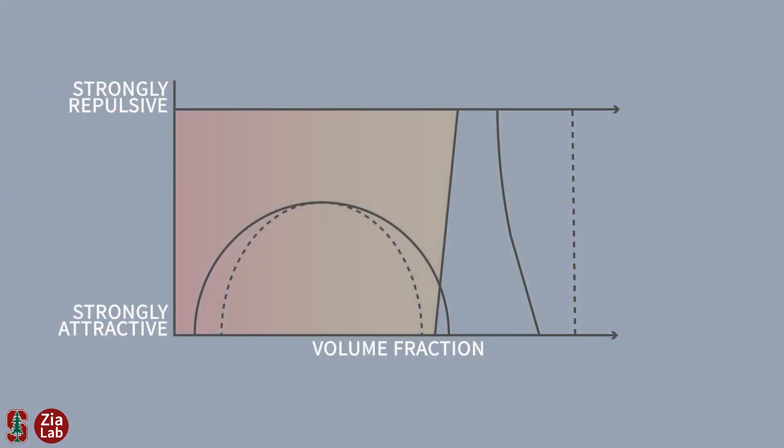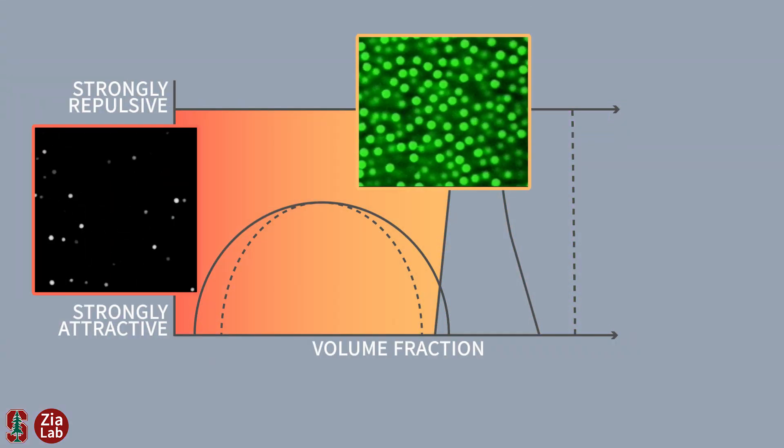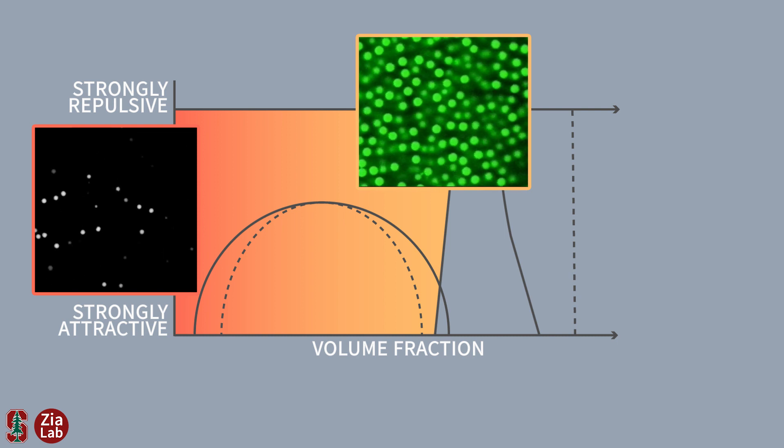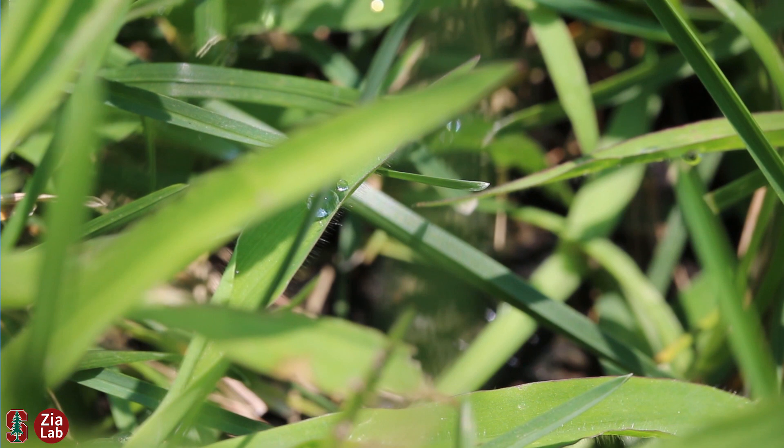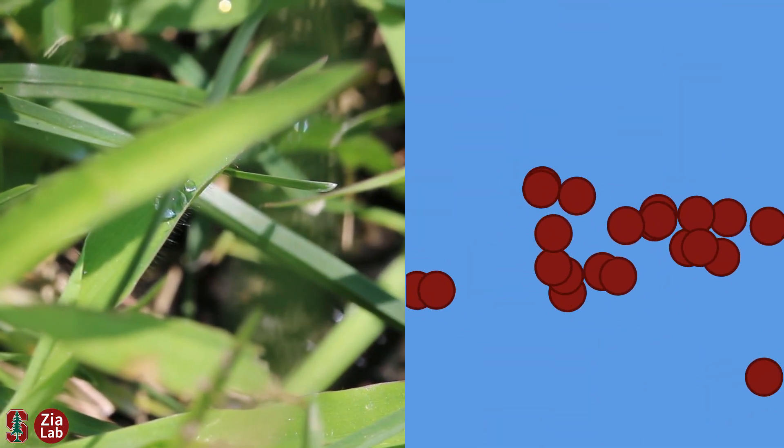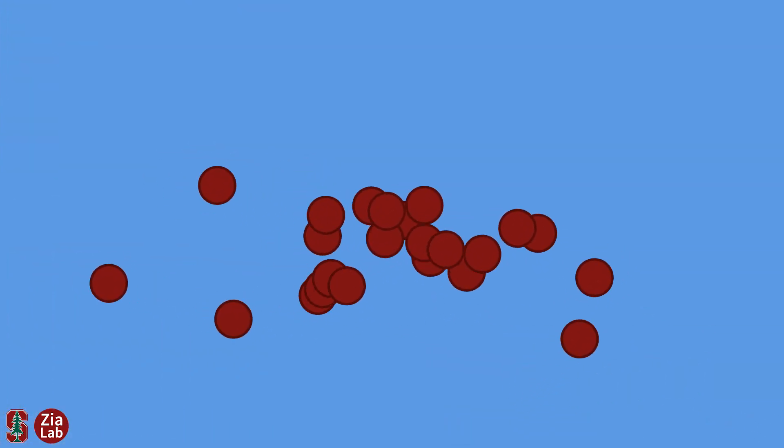In contrast, colloids at lower volume fraction can wiggle more freely, as atoms do in a liquid or gas. Colloids can also transition between these phases through the process of phase separation. Just as water vapor can condense into a droplet, colloids can condense together, leaving the surrounding fluid void of particles.